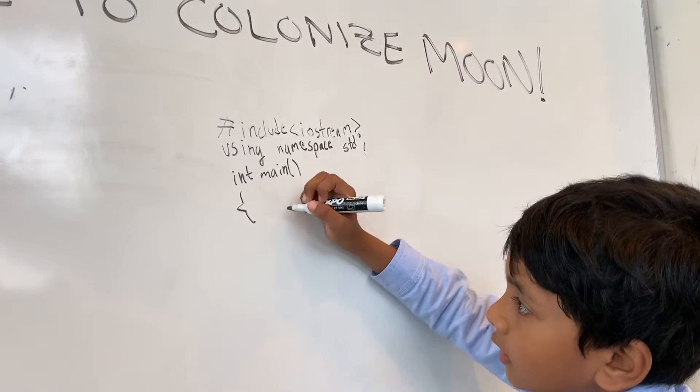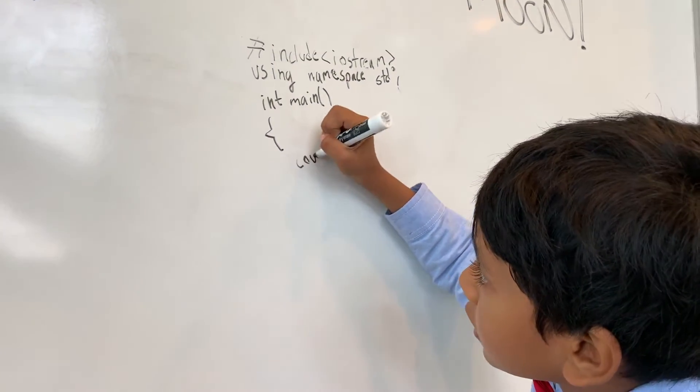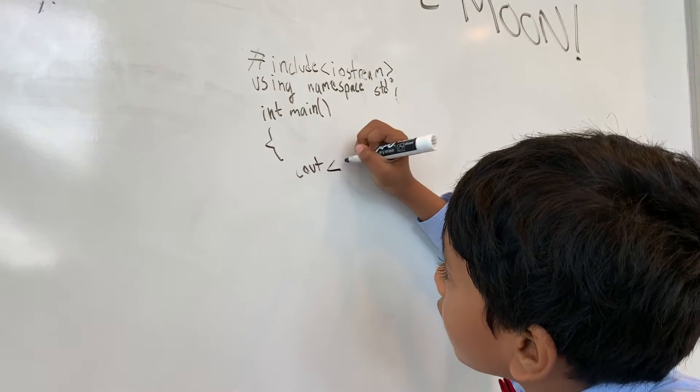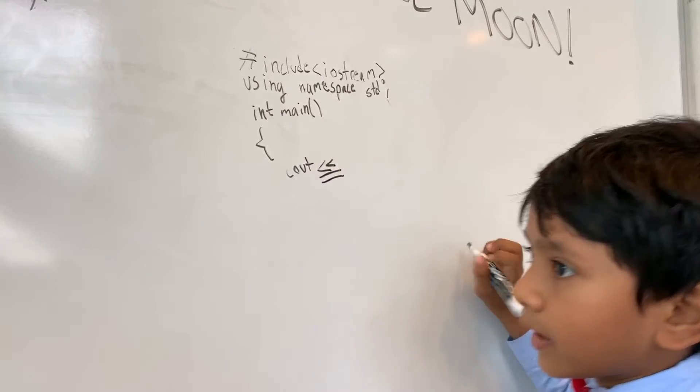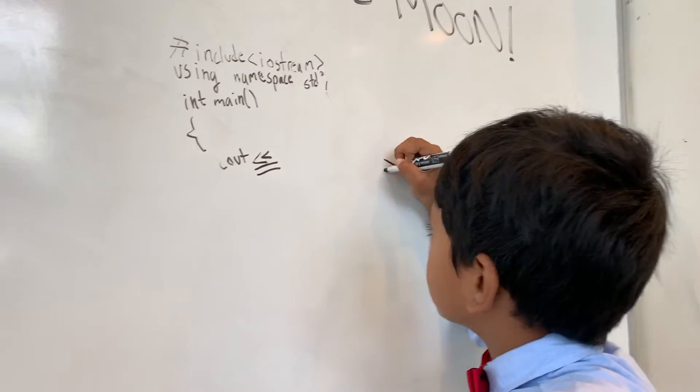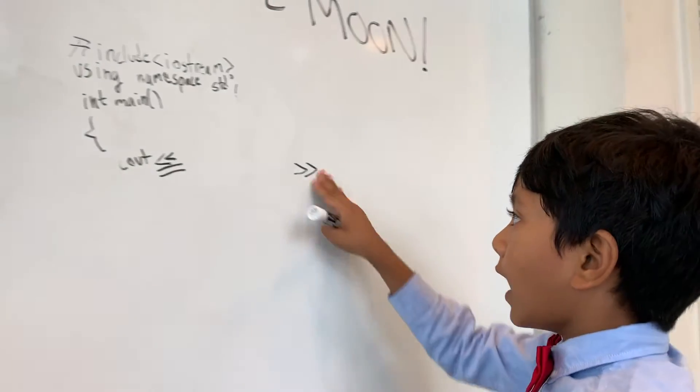So, let's write cout, and then put whatever you want to write. You need the insertion operator. Don't get it confused with the extraction operator, which goes the opposite way.